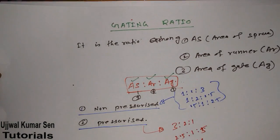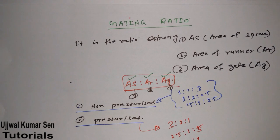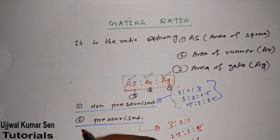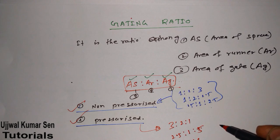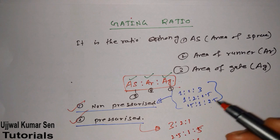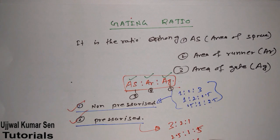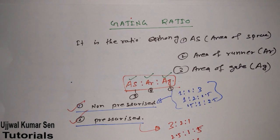So what is important to remember about gating ratio: first, remember the ratio As : Ar : Ag; second, remember the two types — pressurized and non-pressurized; and to identify them, in a pressurized gating system the area of the gate is minimum. In this way you can solve any problem related to gating ratio. It's a simple topic and I hope you've cleared all things through this video. Thanks for watching and see you soon in my next video, bye.